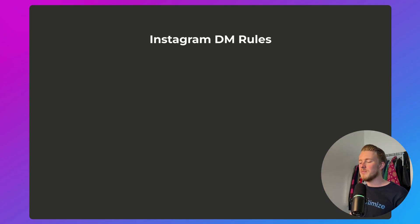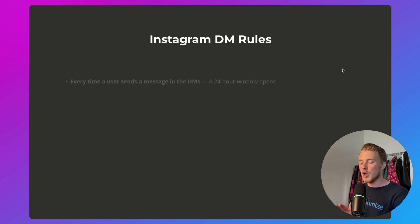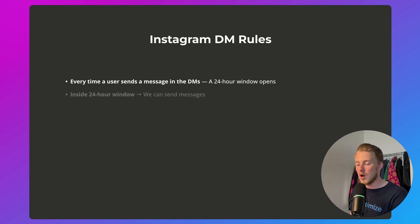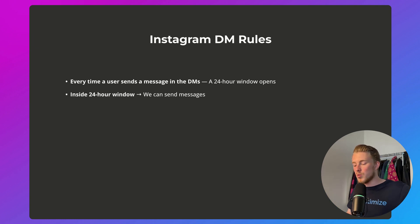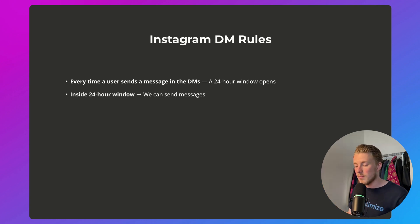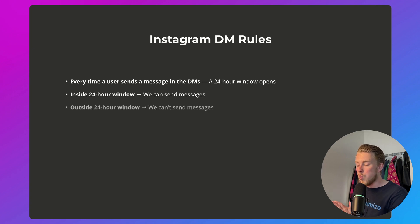So what are the Instagram DM rules? Every time a user sends a message in the DMs, we get a 24-hour window. And within that 24-hour window, we can send messages, follow-ups, notifications, reminders — no problem. But outside the 24-hour window, we can't send any messages.